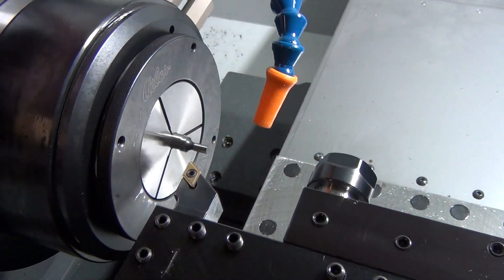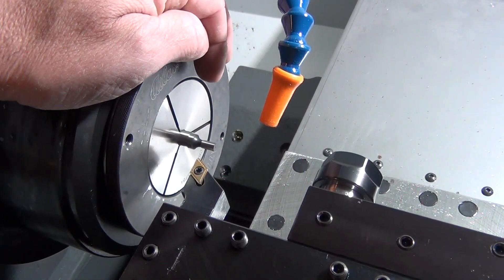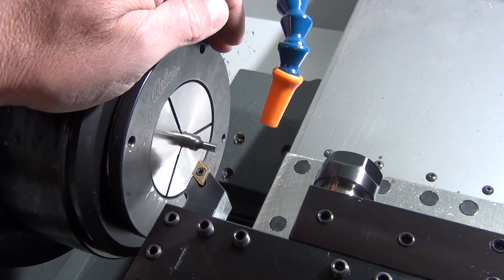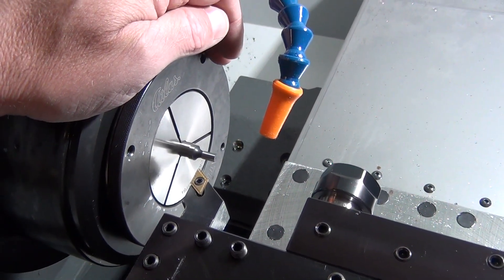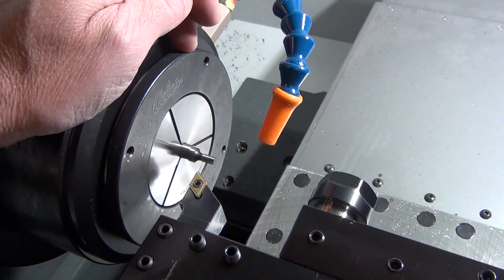This is a Haas TL1 lathe. These wigglers are mostly used in milling machines to find an edge, called an edge finder. This model is a Mitutoyo 050101 with 3/8 inch shank. Starrett also makes these.